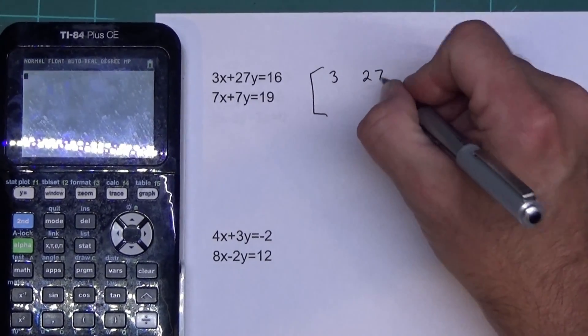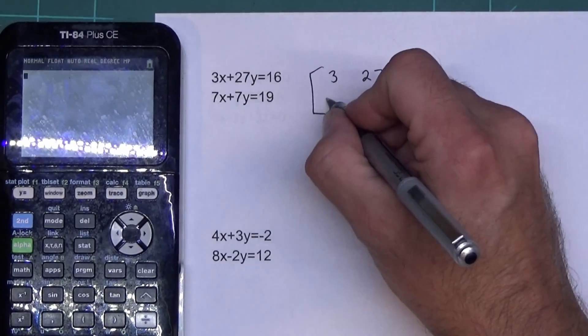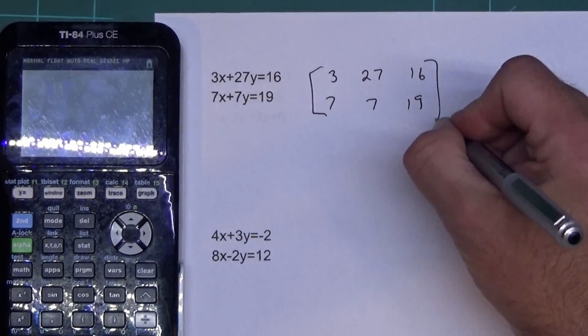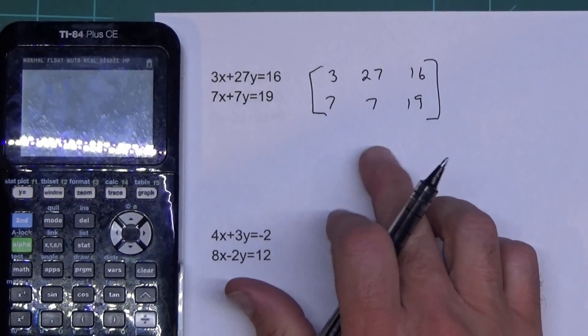Now putting this in a matrix is not very hard. You just strip off the X, Y, so it'll be 3, 27, 16, 7, 7, 19. Now I have to type that in the calculator.